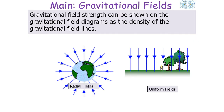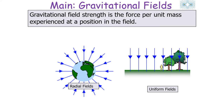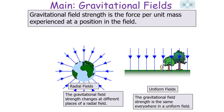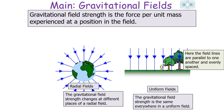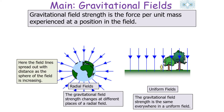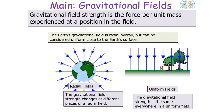Gravitational field strength can be shown on gravitational field diagrams as the density of field lines. It is the force per unit mass experienced at a position in the field. In radial fields the gravitational field strength changes at different places, whilst in a uniform field it is the same everywhere — the field lines are parallel and evenly spaced. The Earth's gravitational field is radial overall but can be considered uniform close to the Earth's surface because the curvature of the field lines is not observable at that scale.